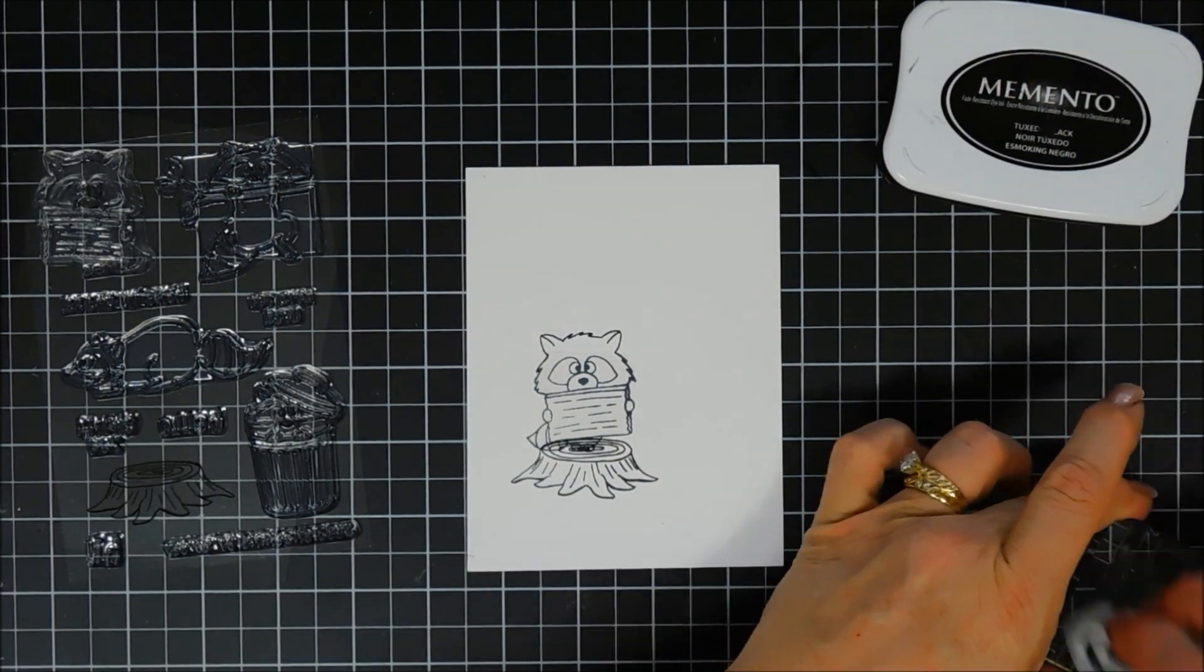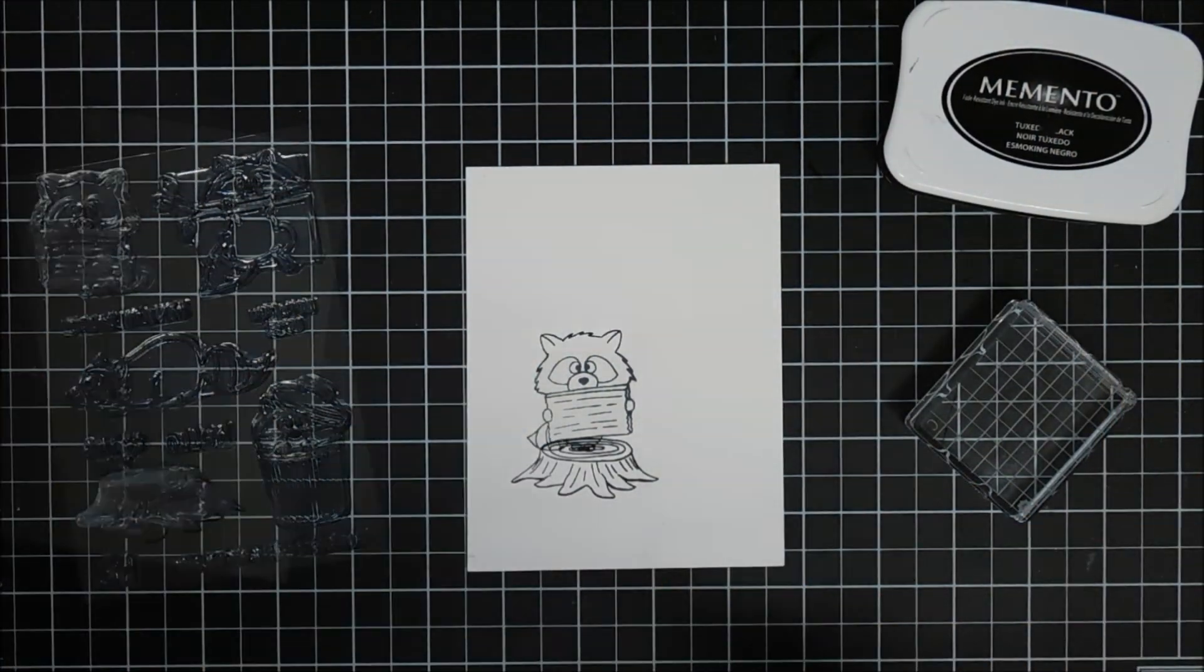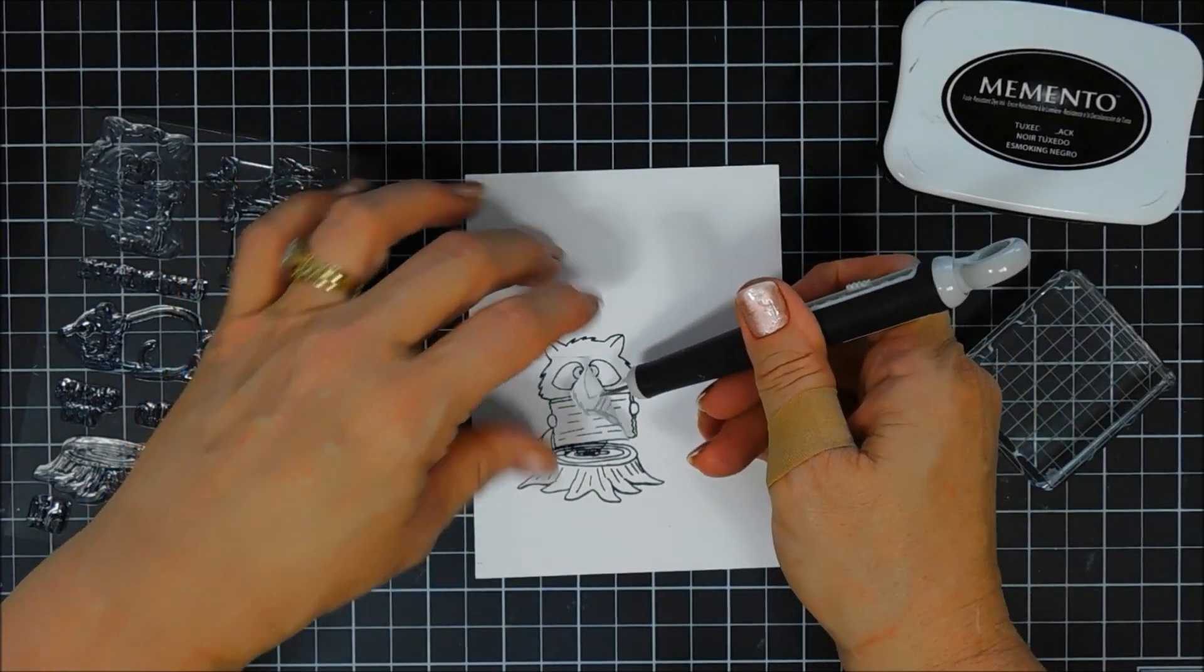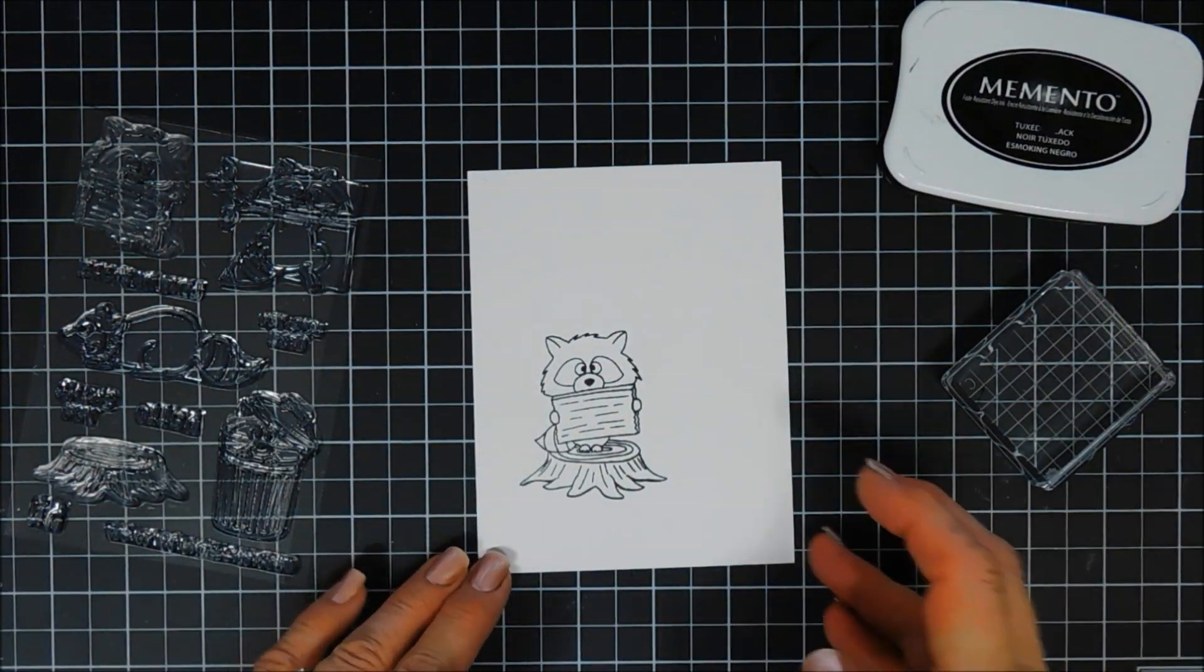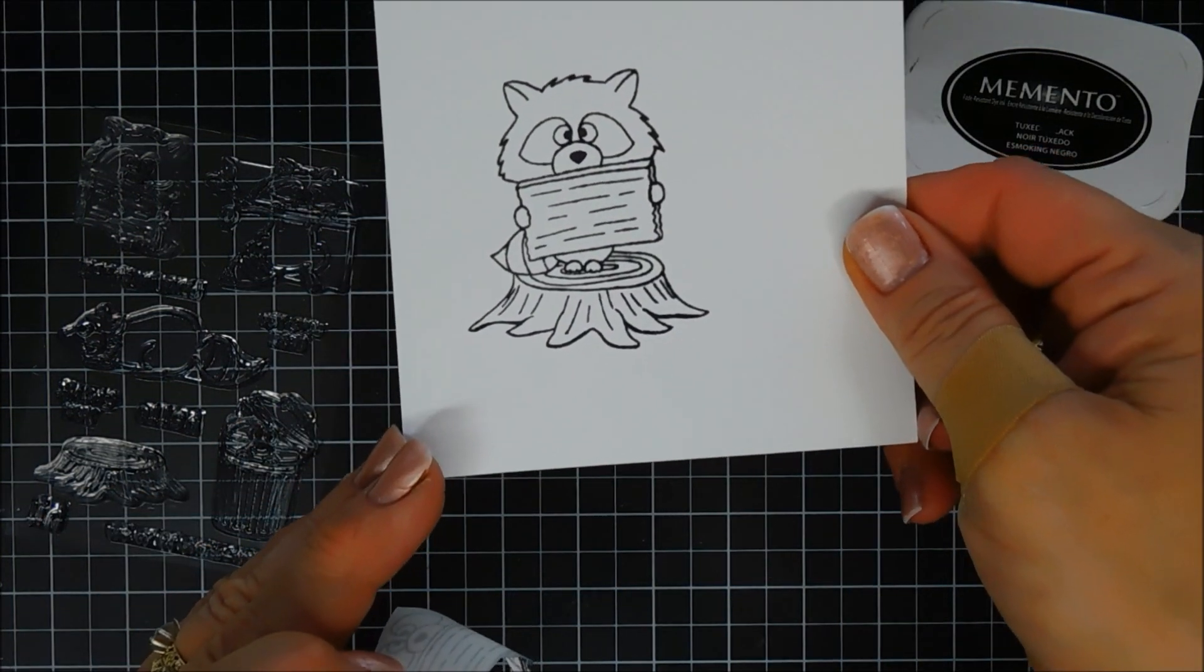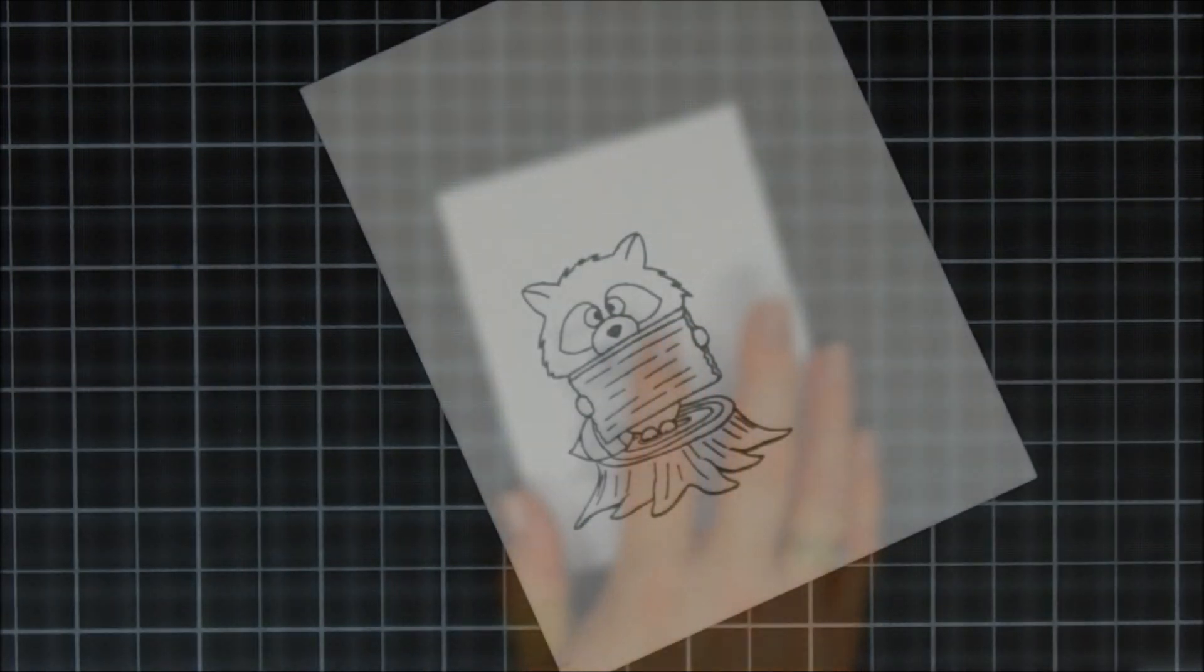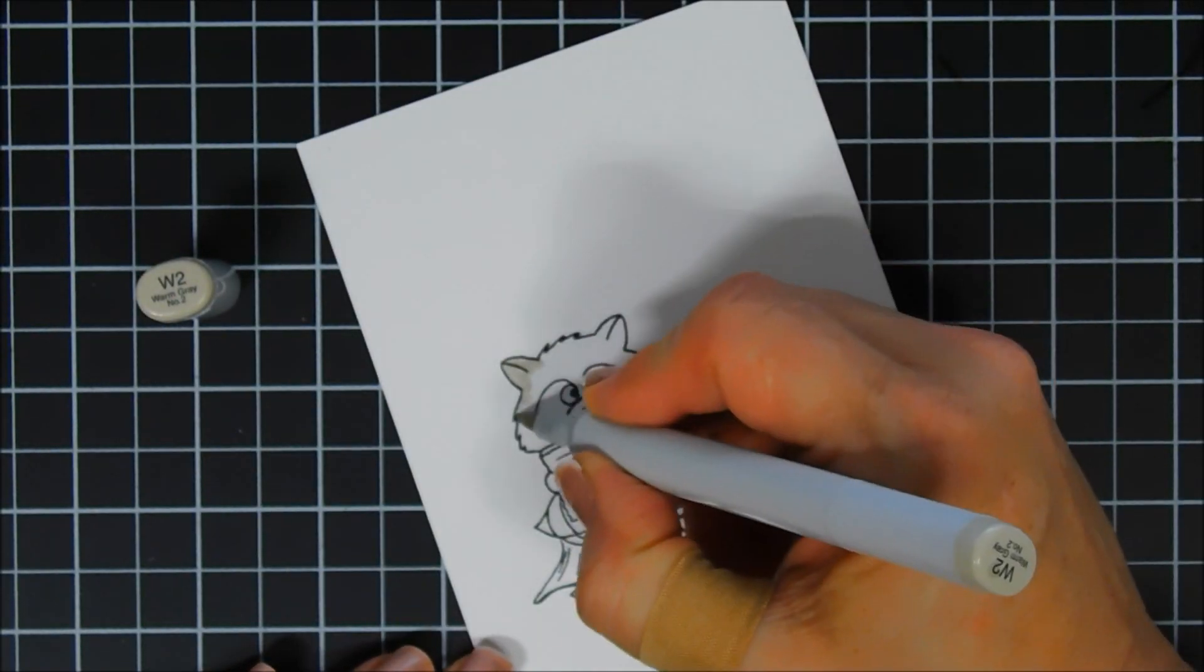Lovely. Okay, we'll just remove our mask and we're going to color. We're going to color with Copic markers, so both the paper and the ink are Copic friendly. I'm going to play a little music while I color, and then when I'm done I will catch you back.